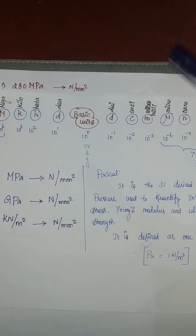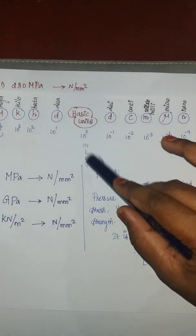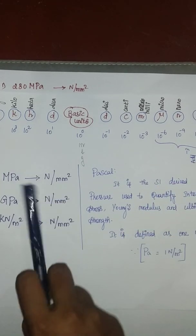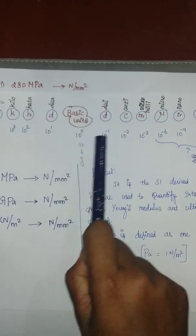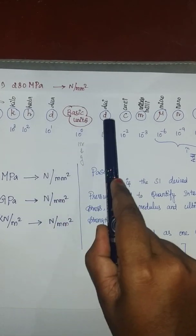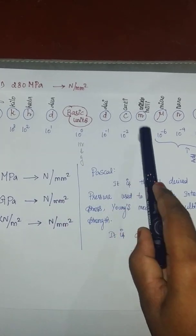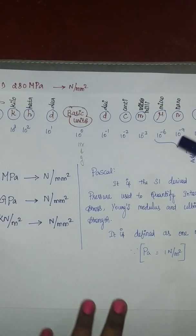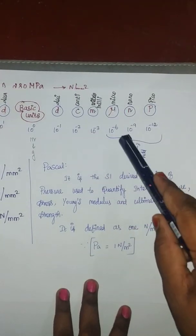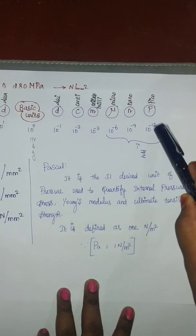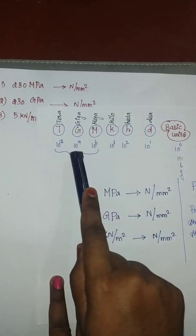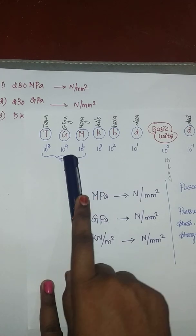Let's see how we use basic units from the last video. King Harsha died by drinking chocolate milk — that's kilo, hecta, deca, deci, centi, milli. Now we use extra 6 units: micro, nano, pico — 3 units on one side — and tera, giga, mega — 3 extra units on the other.